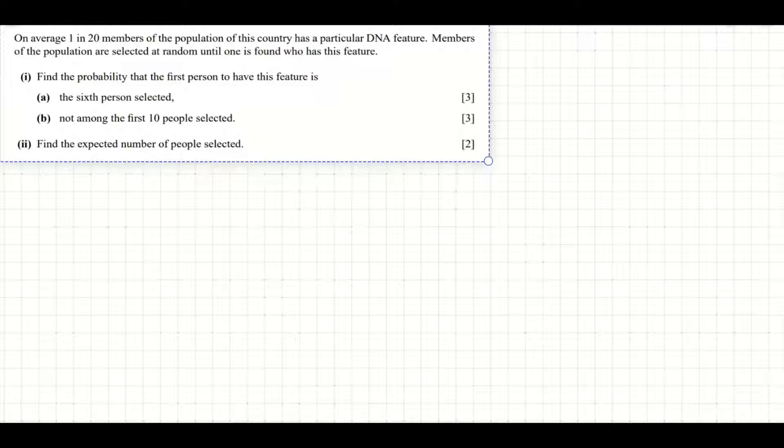On average, one in 20 members of the population have a particular DNA feature. Members of the population are selected at random until one is found with this feature.